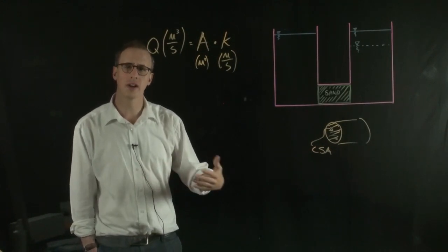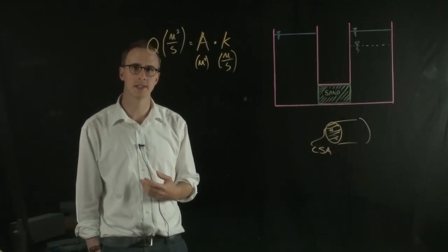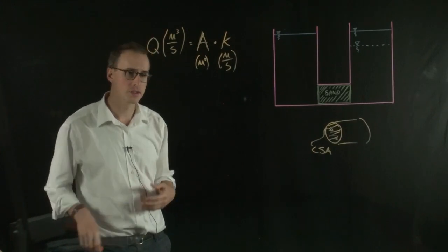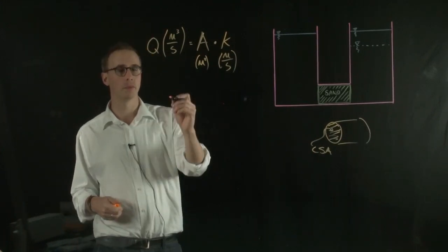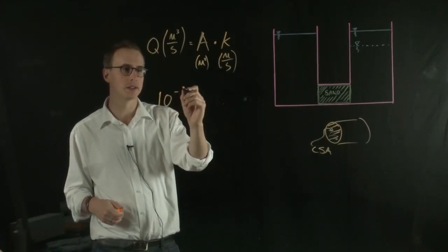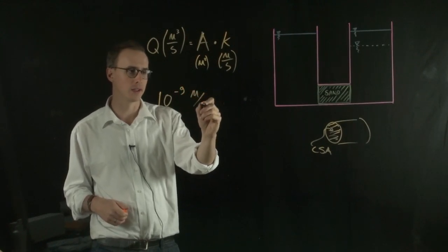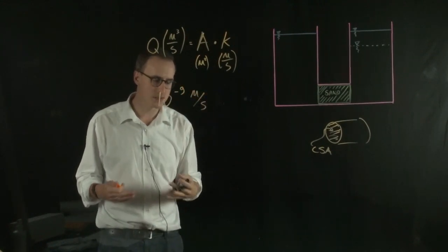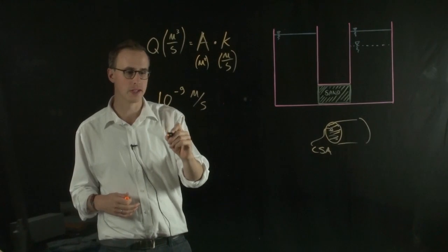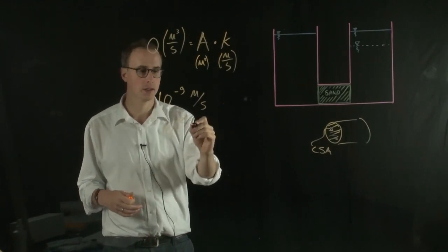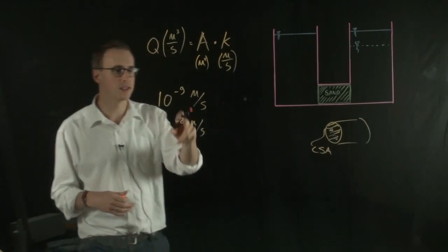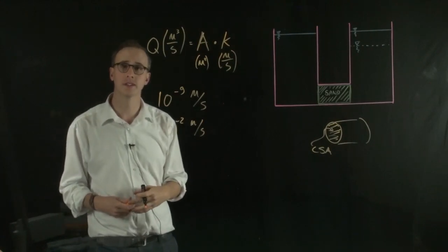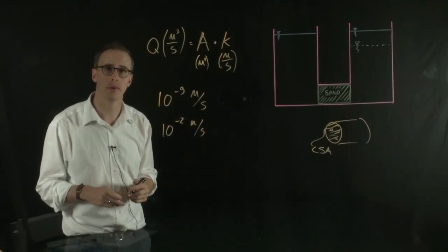And that's so we can cover a huge range of different permeabilities that materials have. So something like a clay might have a permeability on the order of 10 to the minus 9 meters per second. Whereas a sand or a gravel might be on the order of 10 to the minus 2 or something meters per second. And you can see that we've got seven orders of magnitude. It's 10 million times difference in permeability.